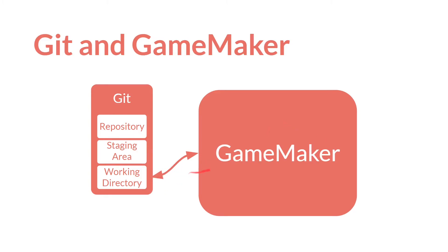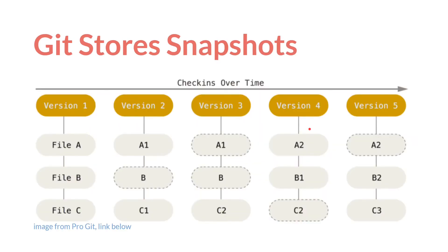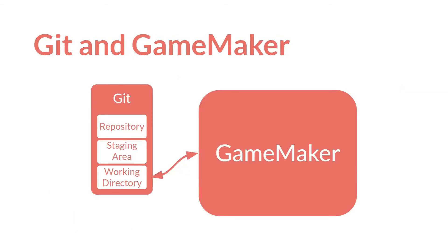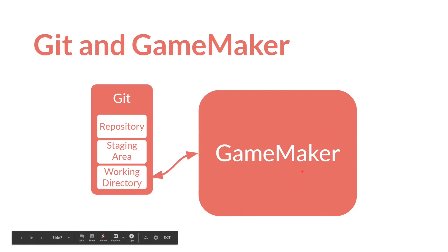But this arrow goes both ways. You can switch over to Git and pull from other people's repositories—from GitHub or from another connected computer—directly into your working directory. You can then check out that repository or that commit, which will change your working directory, and then come over to GameMaker. GameMaker will notice that your working directory has changed and update itself to reflect it. Not only can you take from other people's repositories, but you can jump around inside your own repository. Say version 5 is your most recent—you can revert to version 3 with a single command.